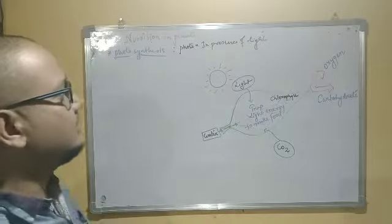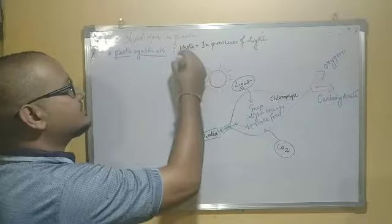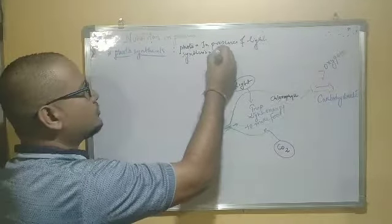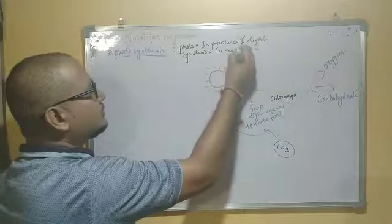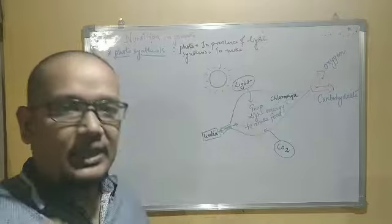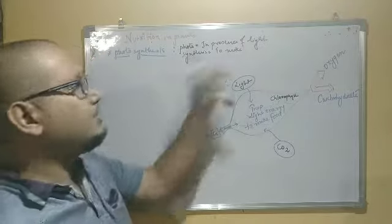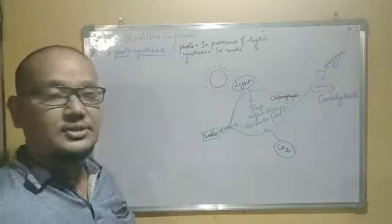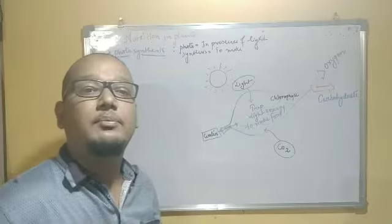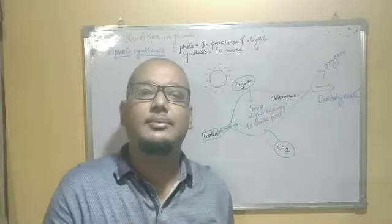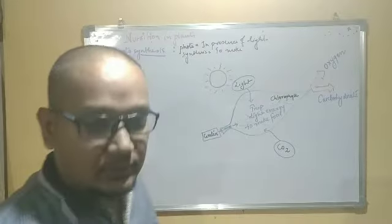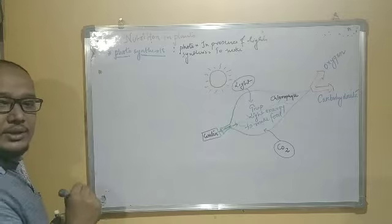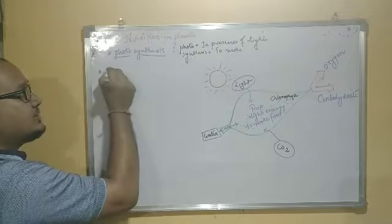Synthesis means to make. So plants are making something in the presence of light only, and that process is photosynthesis. What are plants making? They are preparing food, so we call them photoautotrophs.